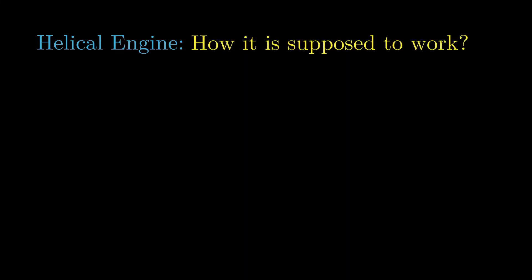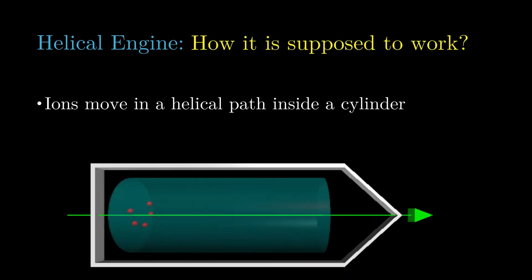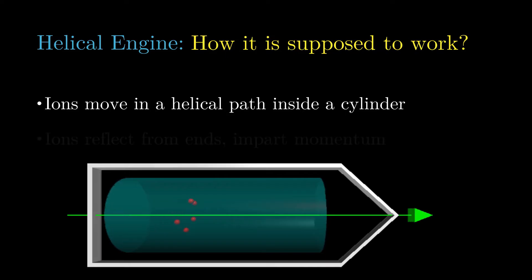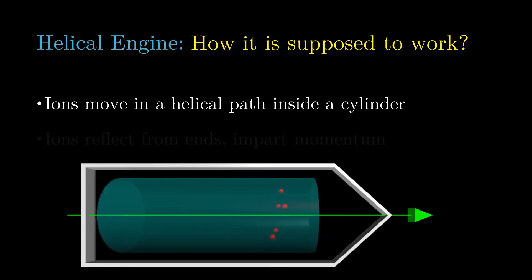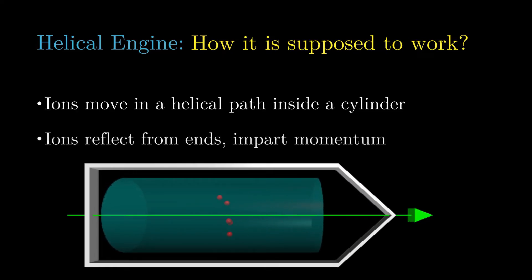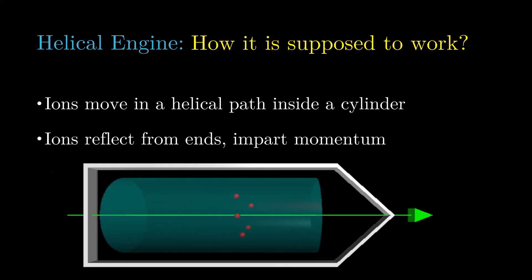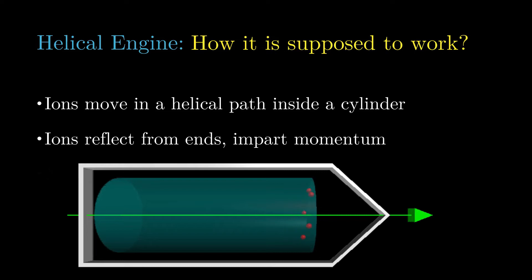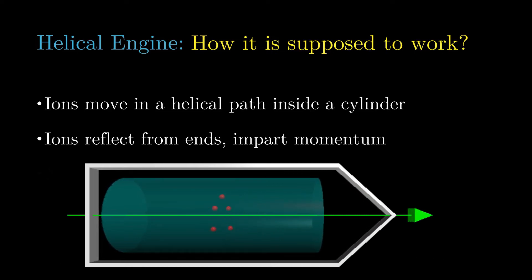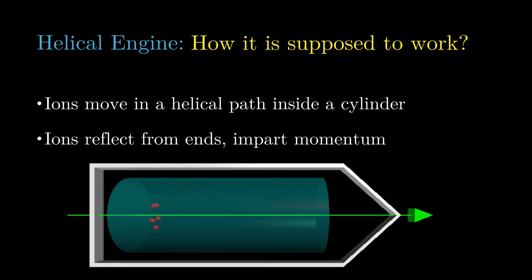Here's how the helical engine is supposed to work. Ions are accelerated to high speeds by electric fields and kept moving in a helical path by magnetic fields. The ions move in a cylindrical chamber with the axis along the z-direction. The ions reflect back and forth between the ends of the cylinder, always following a helical path. When an ion reflects from an end of the cylinder, it imparts some momentum. When it reflects off the plus end, it imparts momentum in the positive z-direction. When it reflects off the minus end, it imparts momentum in the negative z-direction.